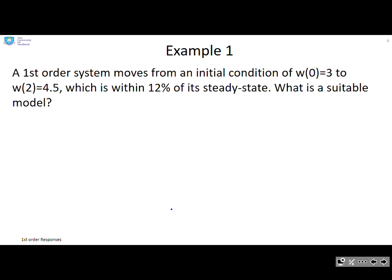Example one. A first order system moves from an initial condition of W(0) equals 3 to W(2) equals 4.5, which is within 12% of its steady state. What is a suitable model?